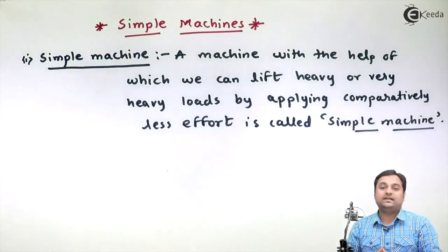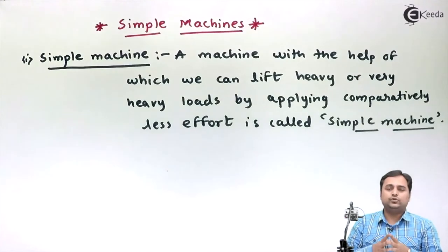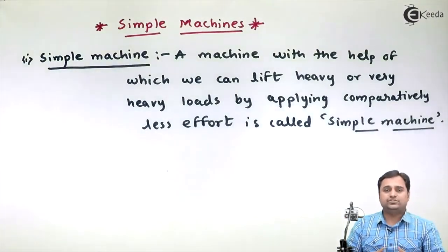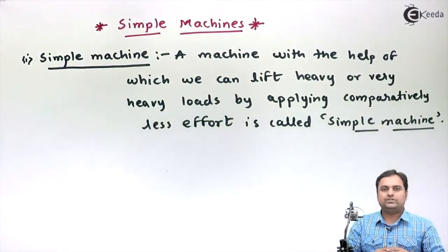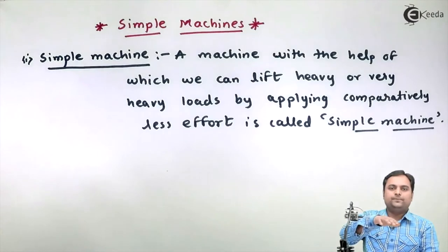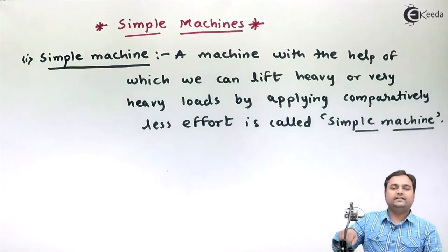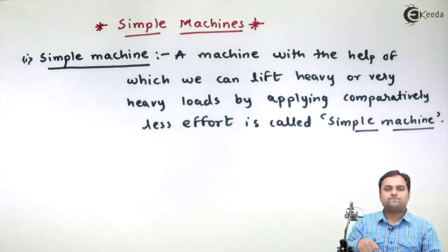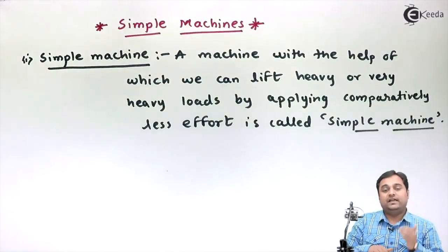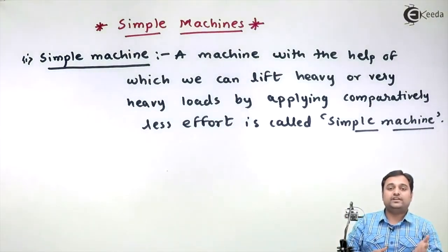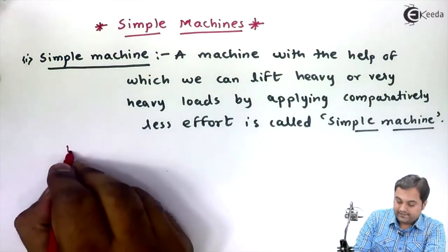In simple machines, we can take the example of a screw jack. A screw jack is a machine which is used to lift heavy loads like a car. If you see a screw jack, it is a very small machine and we apply the effort by rotating the handle of the screw jack. So the effort which we are applying at the handle is less as compared to the weight of the car. So that screw jack is an example of a simple machine.